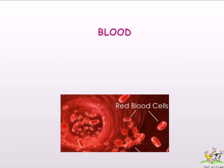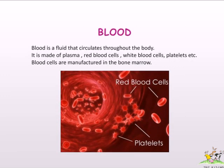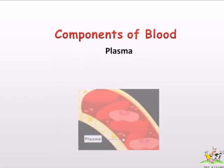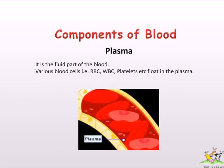Blood is a fluid that circulates throughout the body. It is made of plasma, red blood cells, white blood cells, platelets, etc. Blood cells are manufactured in the bone marrow. Plasma is the fluid part of the blood, in which various blood cells — RBC, WBC, platelets, etc. — float.